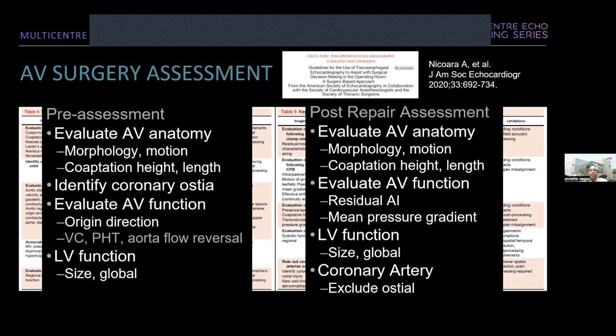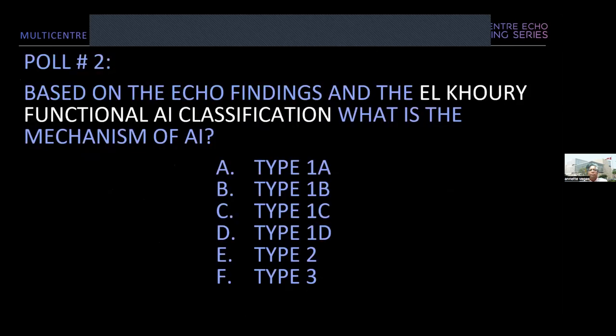Poll number two: based on the echo findings and the L-Curry functional AI classification, what is the mechanism of AI? Is it type 1a, 1b, 1c, 1d, type 2, or type 3?